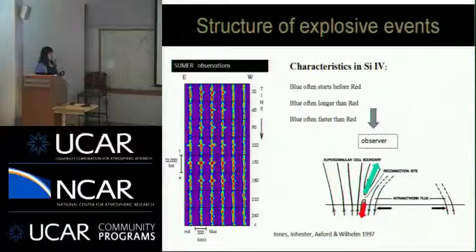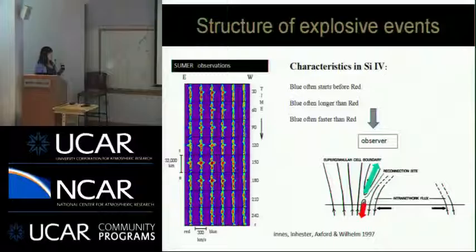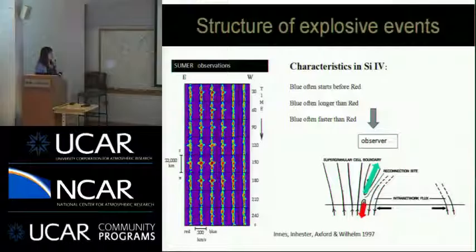This slide shows the time evolution of the light spectrum during explosive events. The horizontal axis is along the spectrograph slit, and the vertical axis is time. This figure tells us three points: the blue component often starts before the red component, the blue one often lasts longer than the red one, and the blue ones are often faster than the red ones.